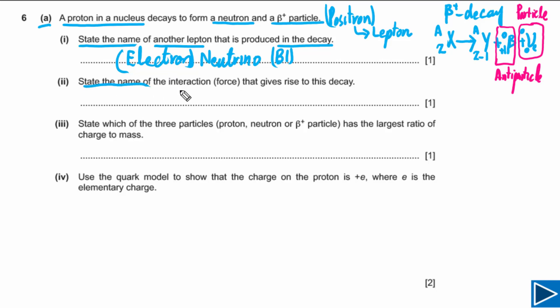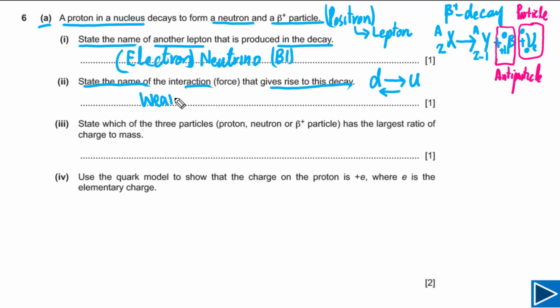For the second part, we need to state the name of the interaction that gives rise to this decay. This is a typical type of question. We need to understand that when a quark changes from one flavour to another flavour — for example when a down quark changes into an up quark or vice versa — the force responsible for that is the weak nuclear force.